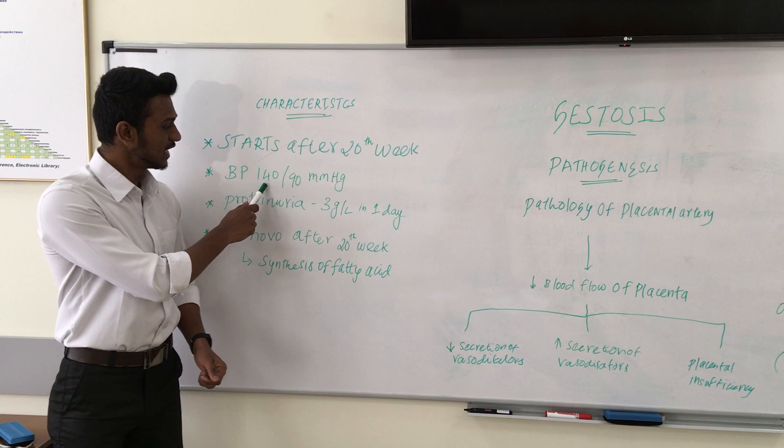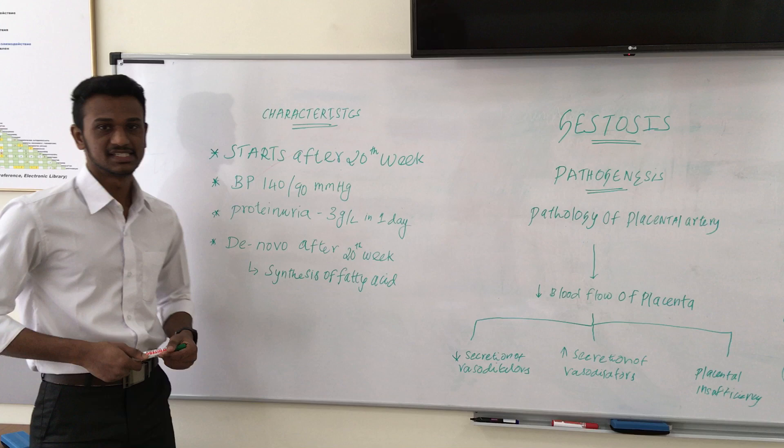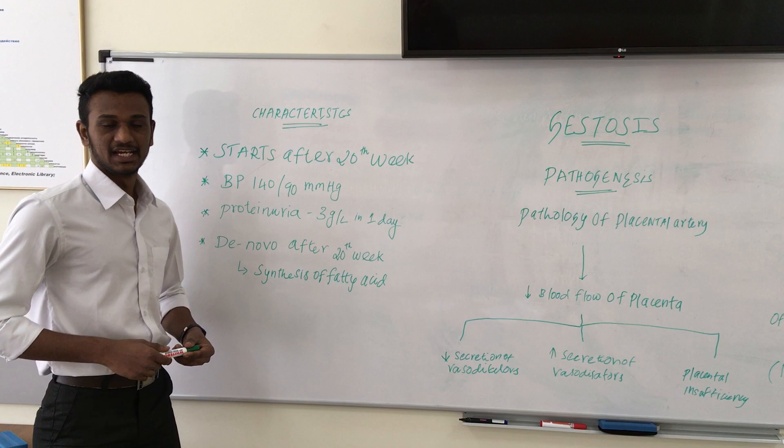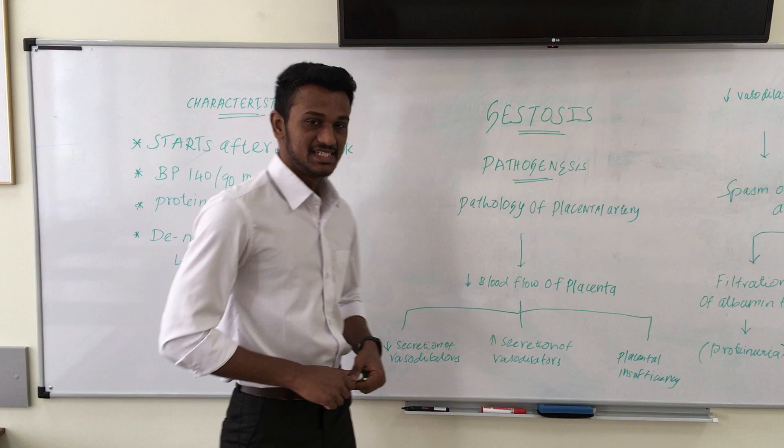Blood pressure should be more than 140/90 mmHg. Another characteristic is proteinuria — three grams per liter of protein should be present in one day of urine collection. De novo synthesis of fatty acid may also happen after the 20th week of gestational age.